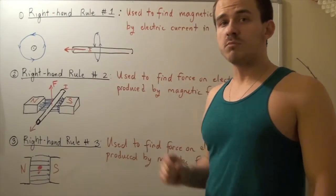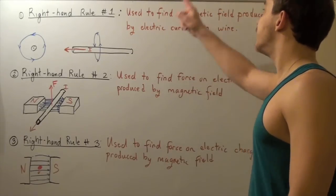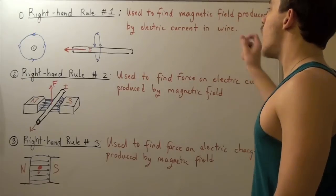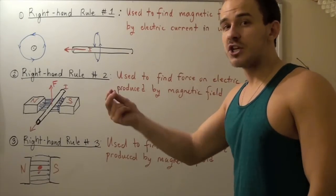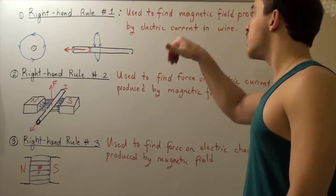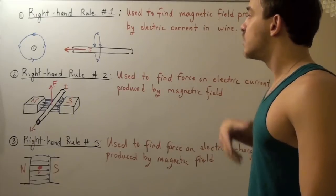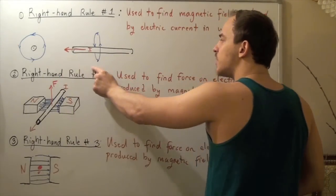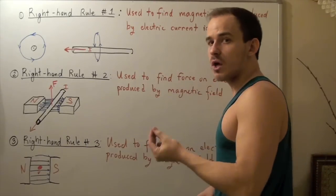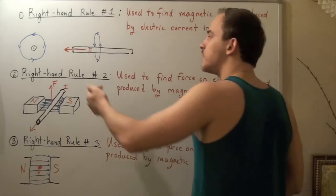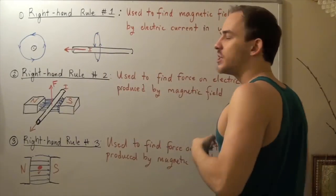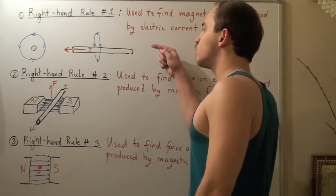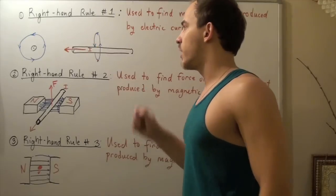Right-hand rule number one is used to find the magnetic field produced by electric current in a wire — specifically, its direction, the motion that the magnetic field makes. Suppose we have a very long wire, and the electrons in this wire are moving in one direction. That means our current by convention will move in the opposite direction.